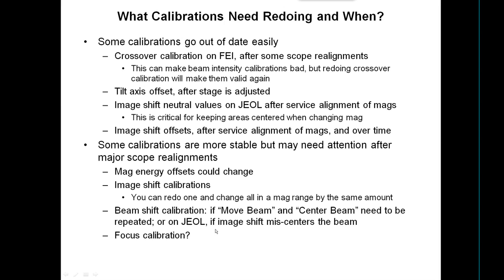Image shift offset calibration is tricky because you have to find a feature recognizable over a very wide range of mags — from say 50,000 down to 100x or 200x. The corner of a section or a rip in the film works well, as long as it's stable. A piece of ice contamination can work too, as long as you can center on it at high mag and still see it at low mags. It's actually a fun calibration — like a video game where you center a feature with the mouse, push a button, and it drops the mag and takes another picture for you to center up.